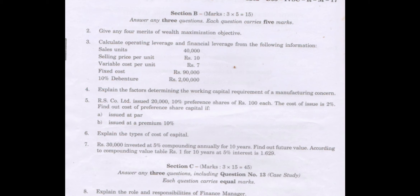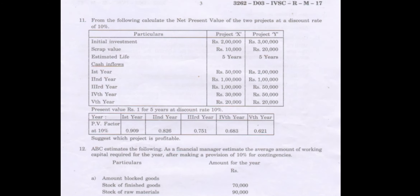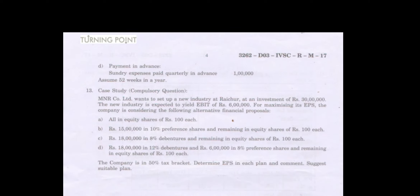The third, fifth, and seventh questions are problems. The second, fourth, and sixth are theory questions. So we have questions three, five, and seven as problems. The next question is to explain the role and responsibilities of the finance manager — that is a theory question. Question number 11, 12, and 13 are problems.